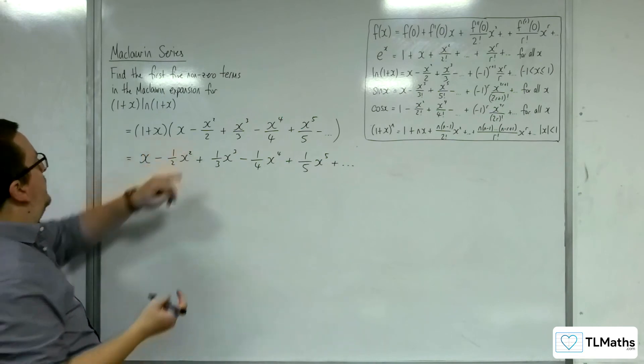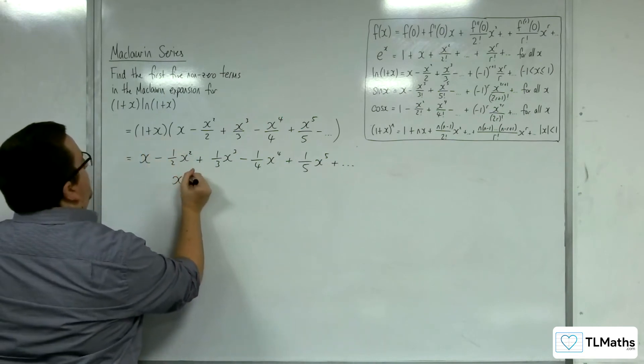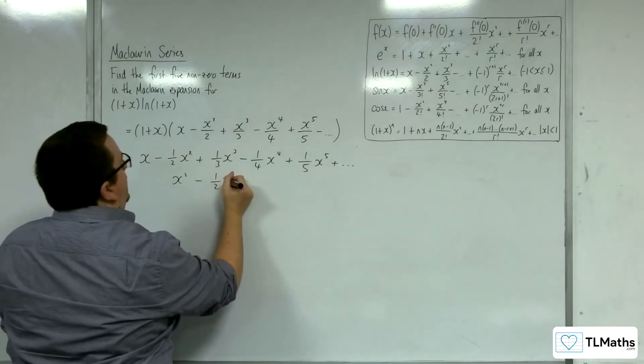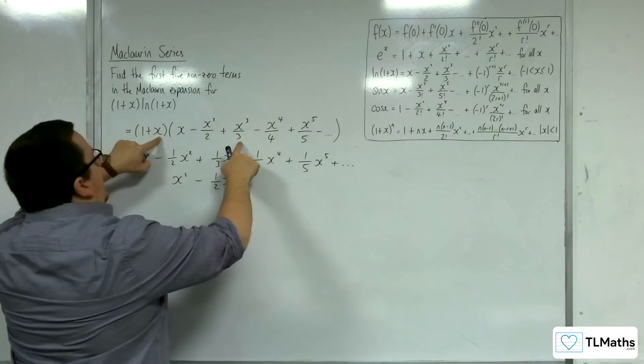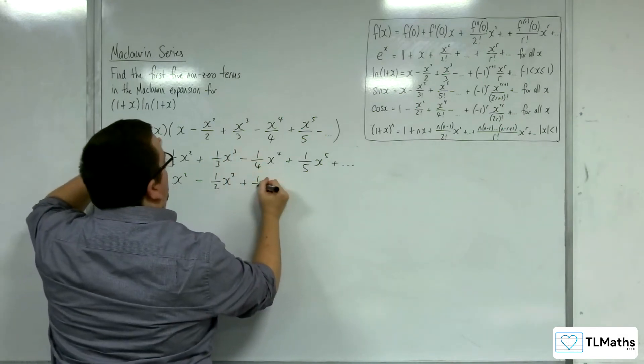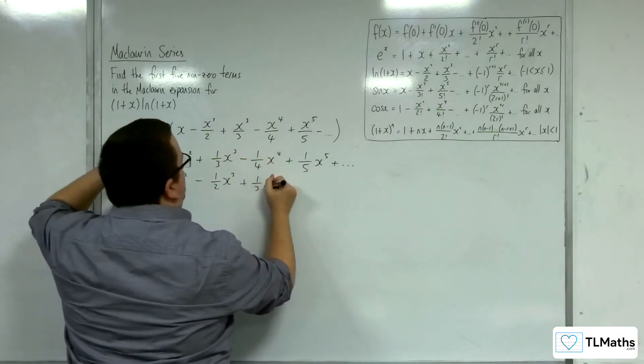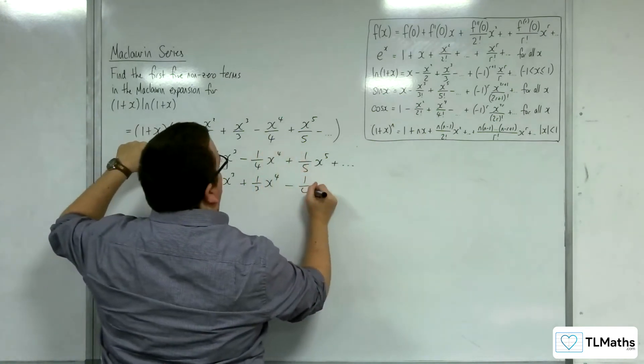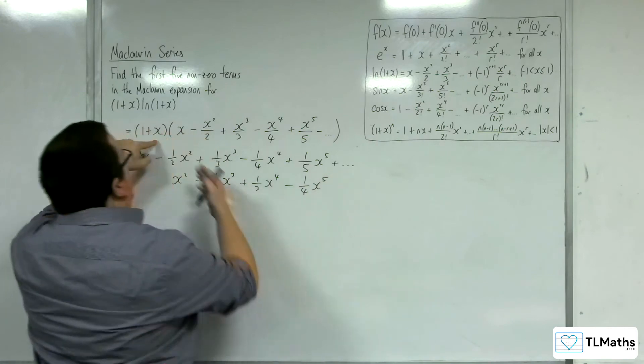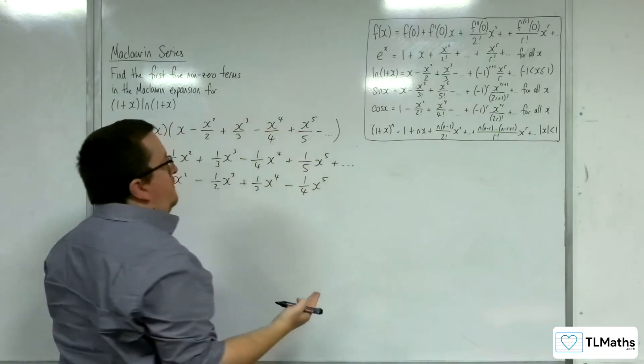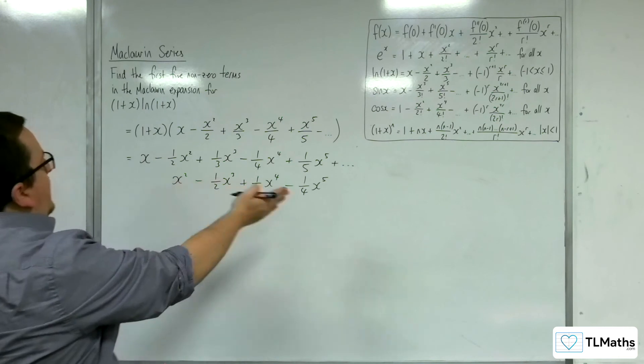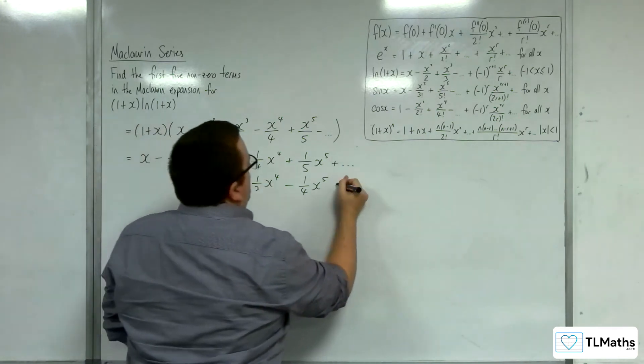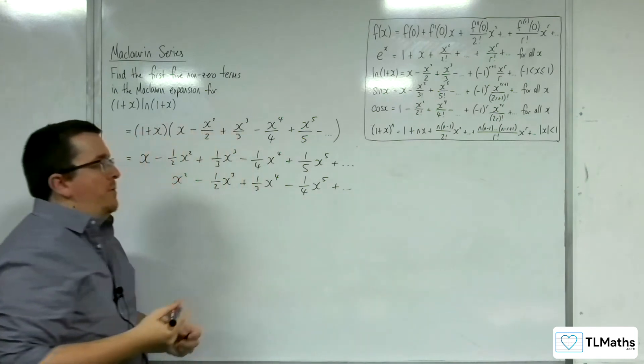Now I'm going to multiply through by x, so x times x will get me x². Then I'm going to get -(1/2)x³. Then I'm going to get (1/3)x⁴, and then -(1/4)x⁵. And then I'm going to get the x times x⁵/5, which is going to be x⁶. I'm not going to get any of these cancelling away, so that's fine. I don't need to worry about any other terms.